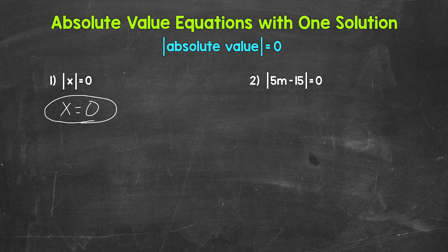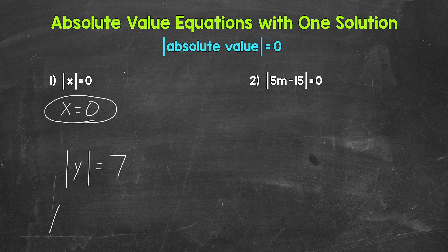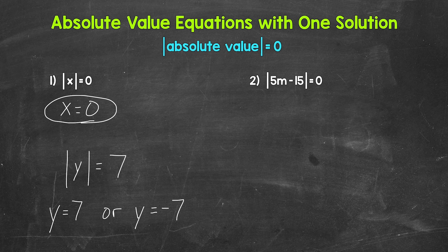Let's compare that to another example. Say we have the absolute value of y equals 7. Here we have two possibilities, two solutions: y can equal 7 or y can equal negative 7. The absolute value of 7 is 7 and the absolute value of negative 7 is 7, so y equals 7 or y equals negative 7 — two solutions. So keep in mind: when the absolute value of something equals 0, we have one solution, because whatever is inside the absolute value has to equal 0.